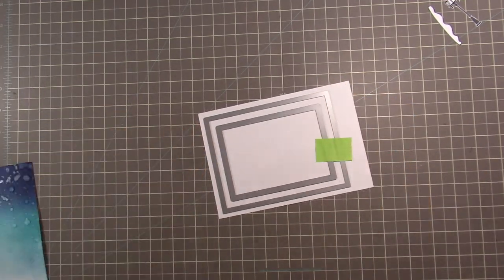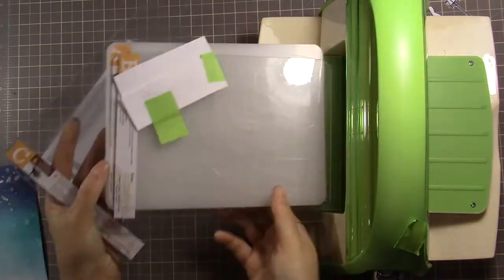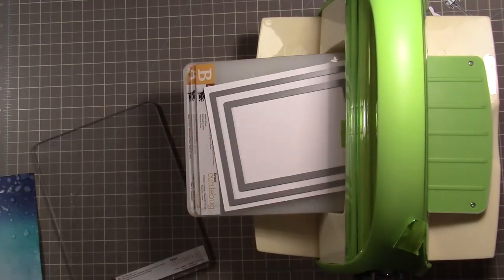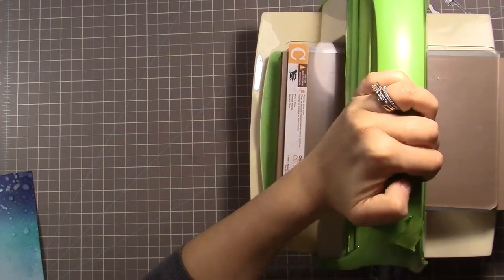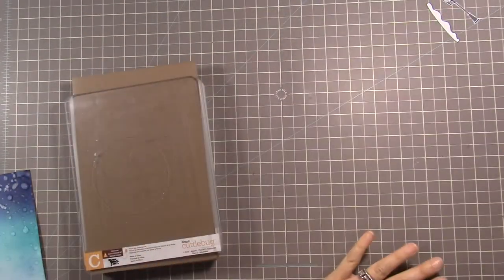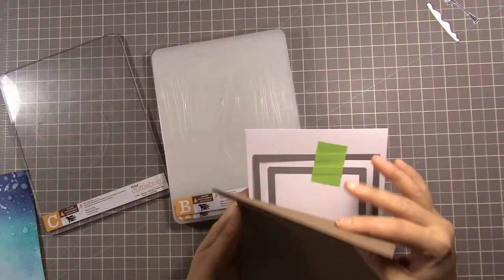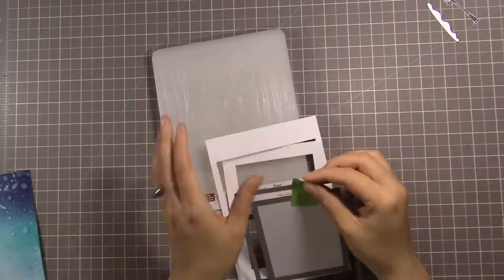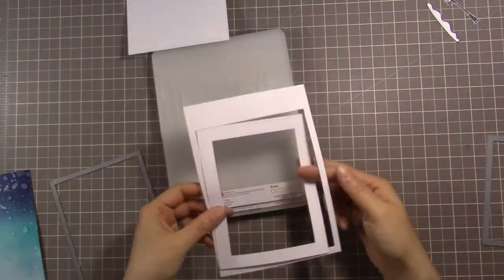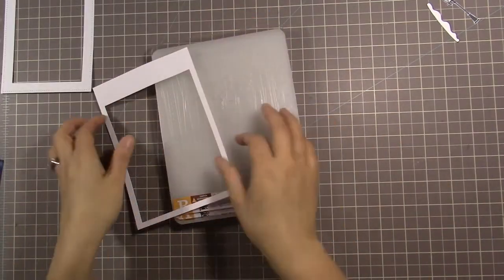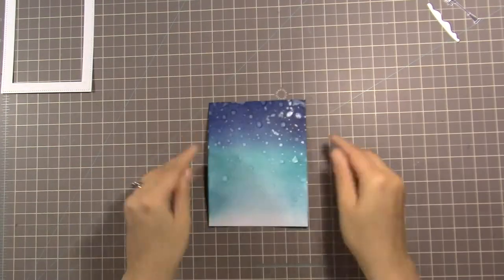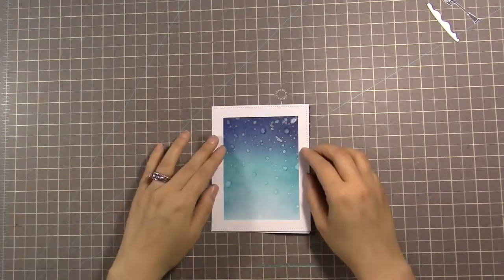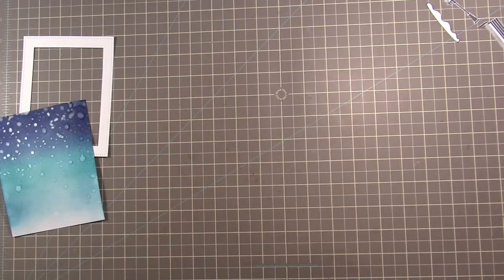I'm taking my go-to Lawn Fawn stitched rectangle die and I'm creating a frame for my shaker card. I'm laying the largest one and then I'm going not the next size down but one below that to create the frame, and I'm running that through my Cuttlebug. I'm using some cardstock as a shim because sometimes I don't get a super clear cut or that stitch doesn't come out perfectly.